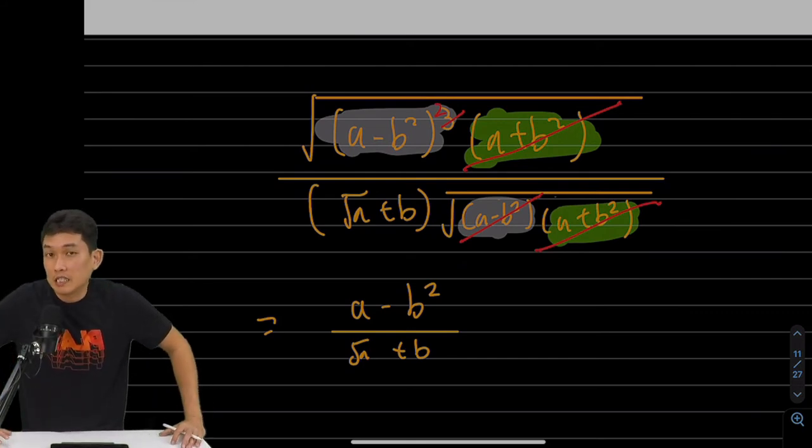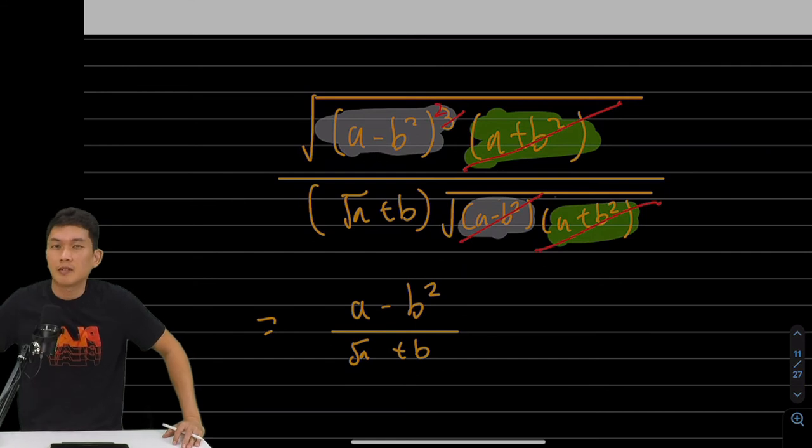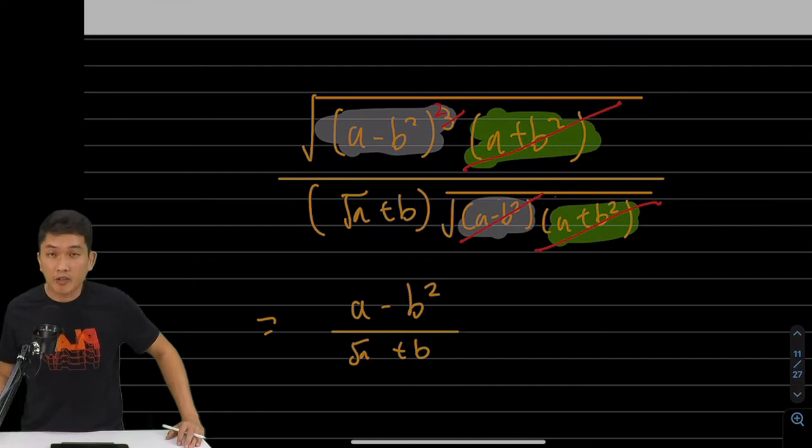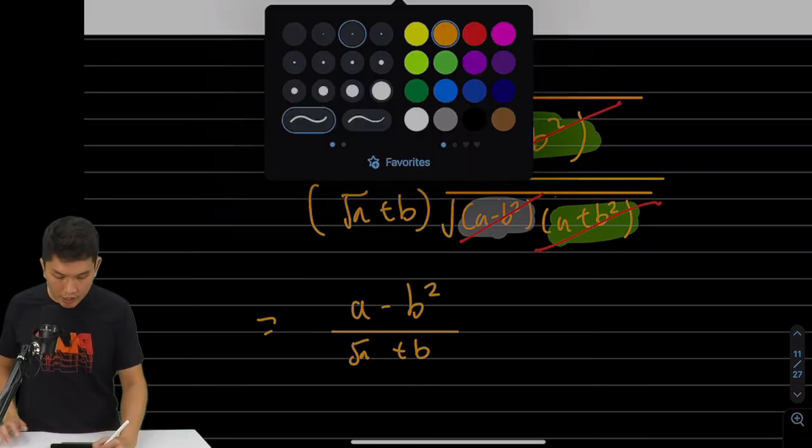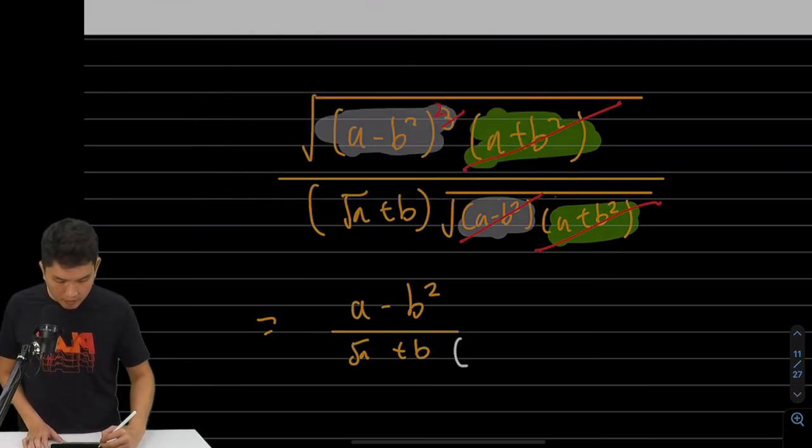Now, we don't like to have square roots in the denominator because back then, when we do mathematics, usually it's for science. So we want to have numerical values to approximate certain things or to find out what are the results of experiment. So having a square root in the denominator makes it very hard for us to calculate a numerical value. So what you want to do is to rationalize the denominator.